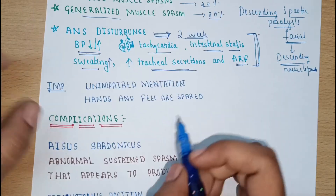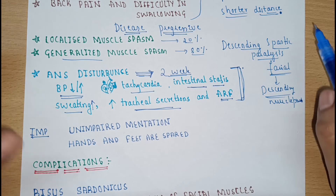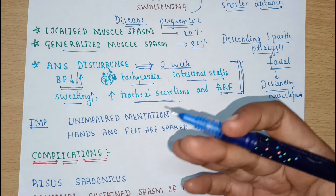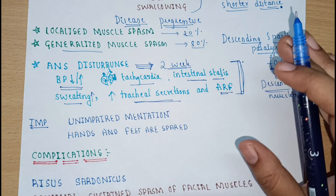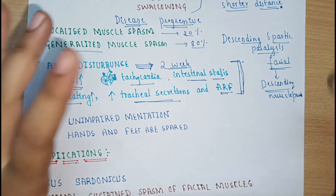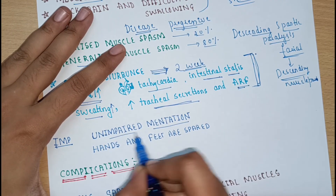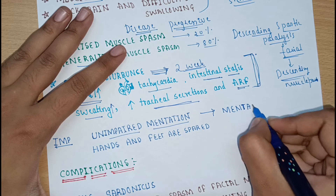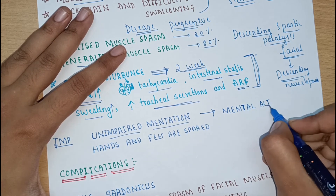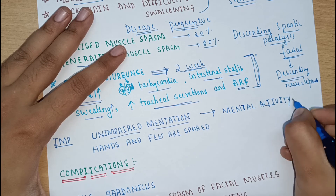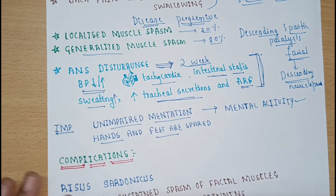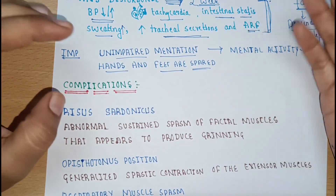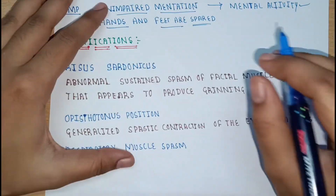One important point: although the person is experiencing many symptoms — muscle ache, back pain, difficulty in swallowing, fluctuating blood pressure, increased sweating — he still has unimpaired mentation. His mental activity is completely normal. Also, the hands and feet are spared, meaning they are not involved in the muscle spasm.